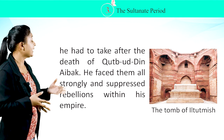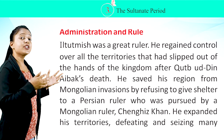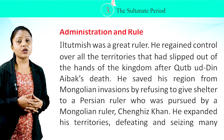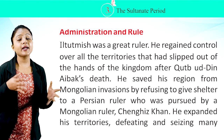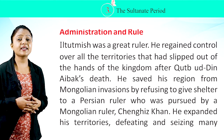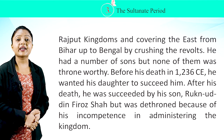Iltutmish was a great ruler who regained control over all the territories that had slipped out of the kingdom's hands after Qutubuddin Aibak's death. He saved his region from Mongol invasions by refusing to give shelter to a Persian ruler pursued by Genghis Khan. He expanded his territories by defeating and seizing many Rajput kingdoms, extending from Bihar to Bengal by crushing revolts.